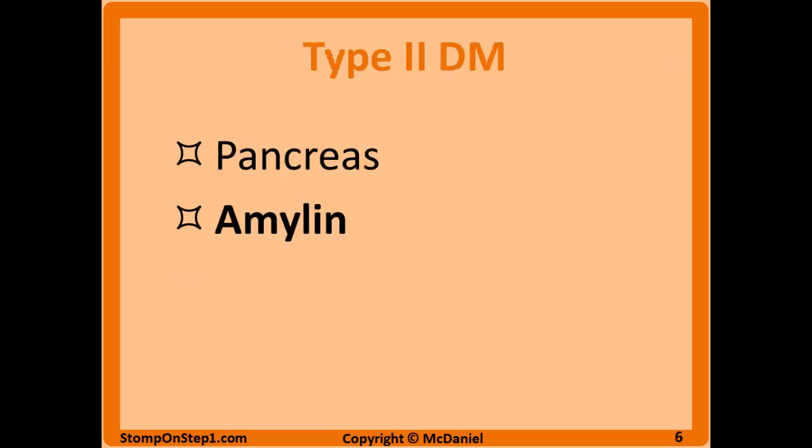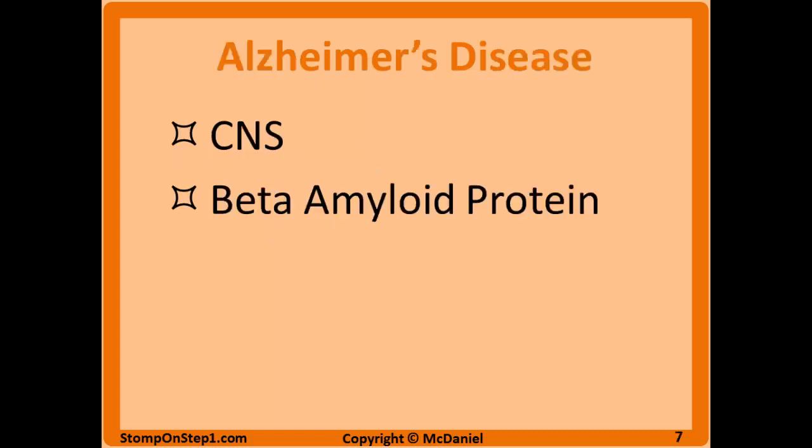In type 2 diabetes, you're going to have increased secretion of insulin. Amyloid is secreted in equal parts with insulin, so when you're creating a whole bunch of insulin to control blood sugar in diabetes, you're also going to have a whole bunch of amyloid. This amyloid can then aggregate in the beta cells of the pancreas. Alzheimer's disease also involves amyloidosis, primarily in the CNS, with aggregates made up of beta amyloid protein. The amyloid precursor protein is cleaved for unknown reasons, and these fragments — known as beta amyloid protein — can aggregate in the brain.